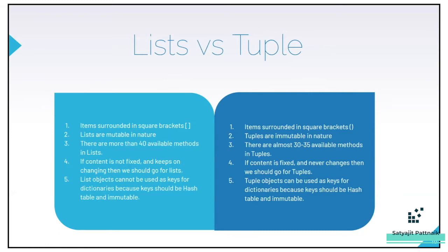Lists are mutable in nature — you can access, edit, and update a list. You can change the contents of a list, which is not possible in tuples. We should also mention the available methods: in lists, we have more than 40 available methods — around 42 to 43. In tuples, we have almost 30 to 35 available methods.